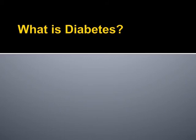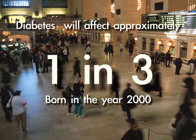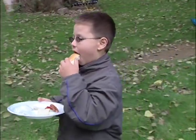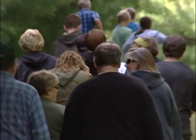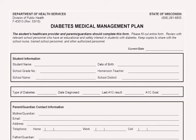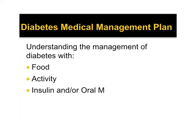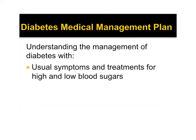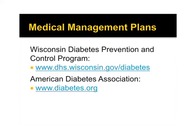Diabetes is a common medical condition affecting both children and adults. It is estimated that one in three people born in the year 2000 will develop diabetes. This video will discuss information more specific to Type 1 Diabetes. Each person with diabetes has an individual plan of care. When young people with diabetes participate in organized activities, they usually have a written diabetes plan called a Diabetes Medical Management Plan. The plan will include how they manage their diabetes with food, activity, and insulin and/or oral medications, their usual symptoms and treatments for high and low blood sugars, and contact information in case of an emergency. If you are caring for someone with Type 1 diabetes, discuss details of the Diabetes Management Plan with a parent or guardian.